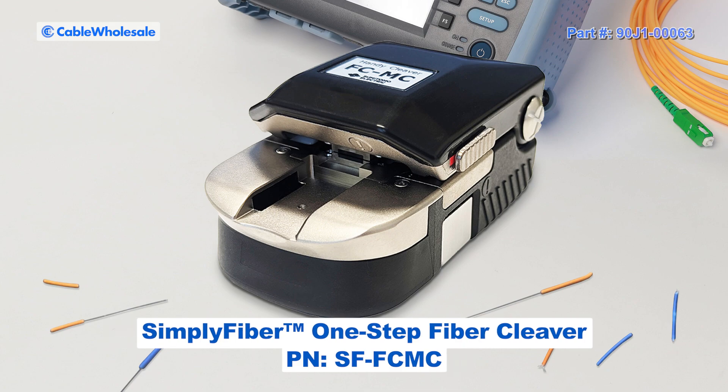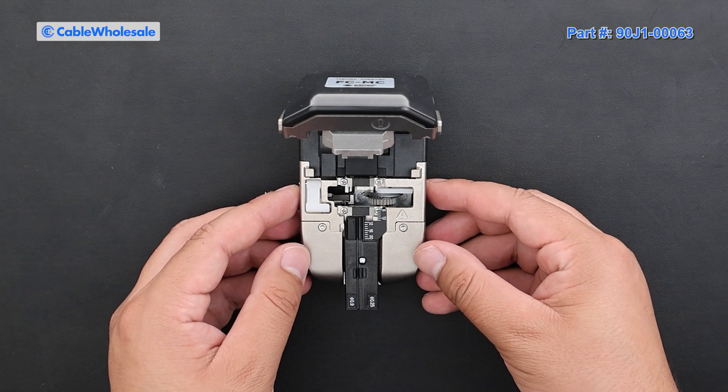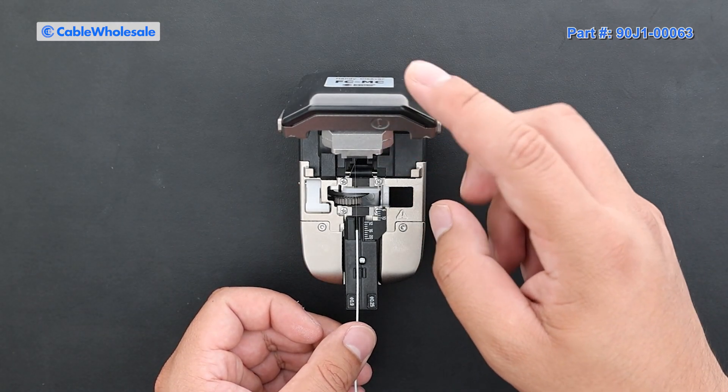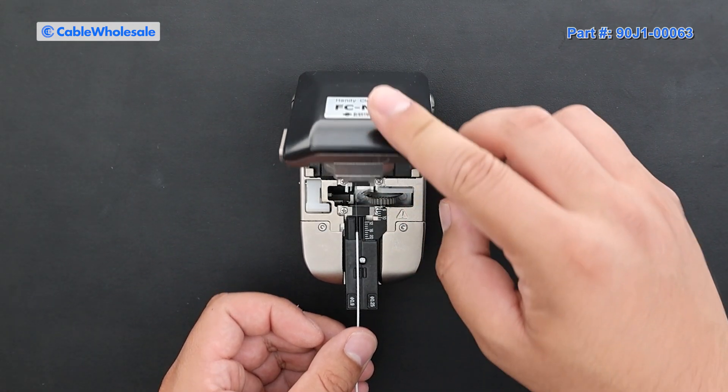There are also one-step cleavers in which you just push down the lid and the cleaver does everything else, like pushing the blade and disposing of the fiber. Using the cleavers with the work mat makes working with fiber a breeze.